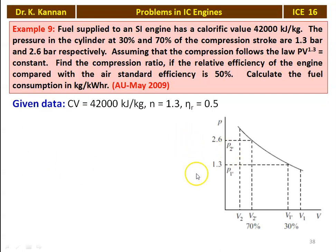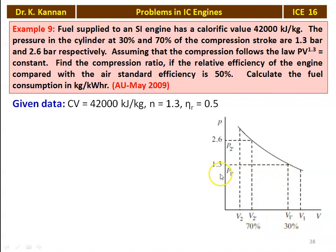The PV diagram for the compression process is shown. V1 is the beginning of the compression and V2 is the end of the compression. We are given 30 percent of the compression stroke as V1-dash and 70 percent of the compression stroke as V2-dash. At V1-dash, the pressure is 1.3 bar. At V2-dash, the pressure is 2.6 bar. The compression begins at V1 and ends at V2.